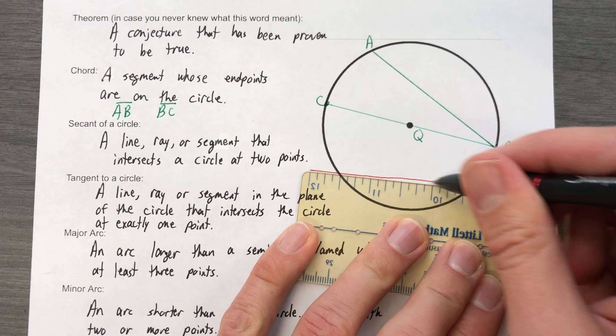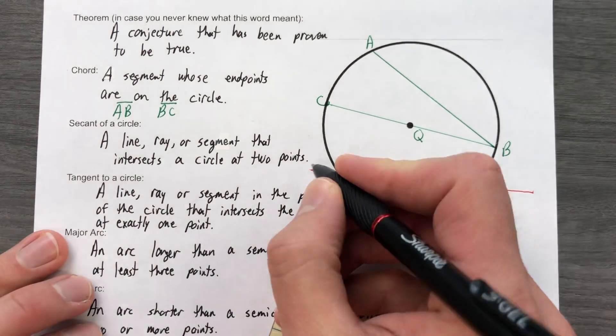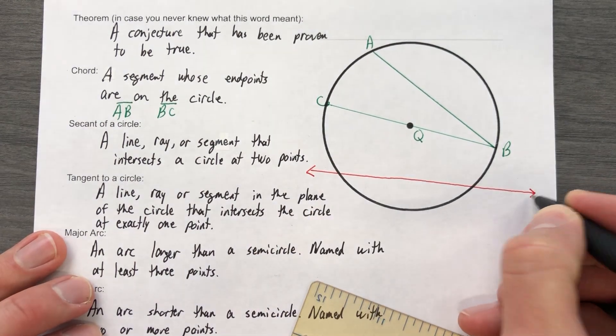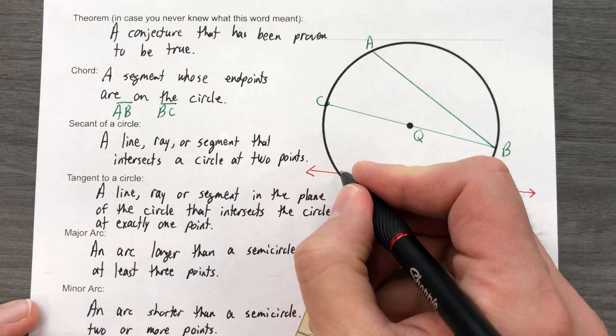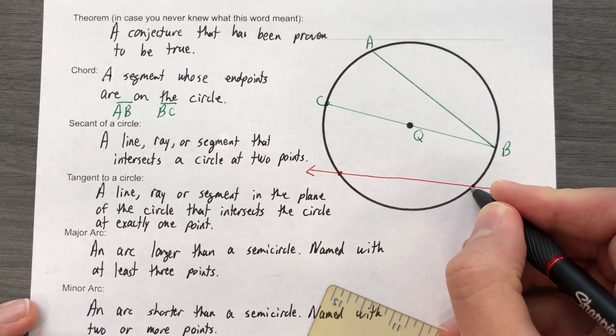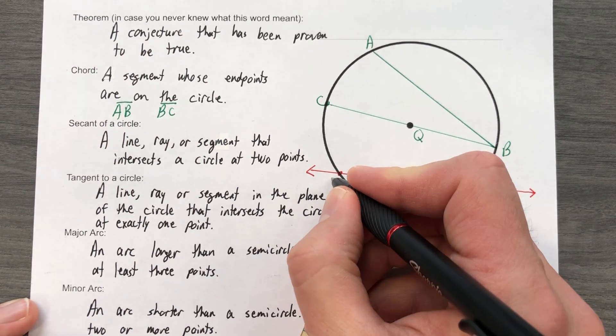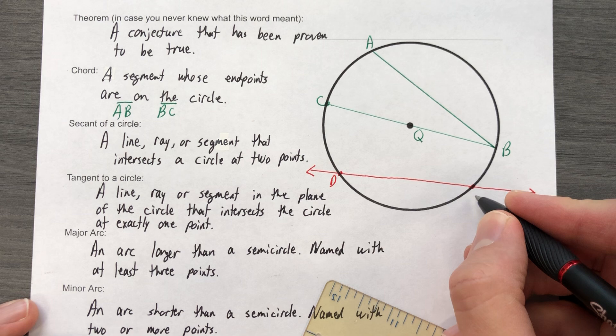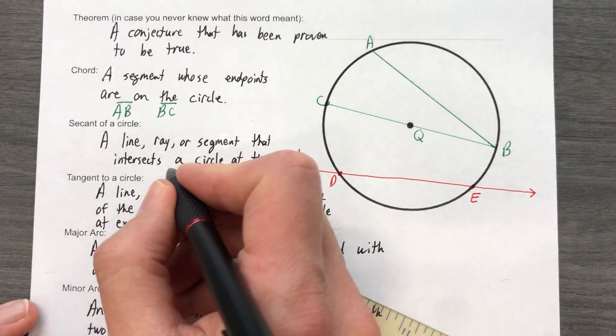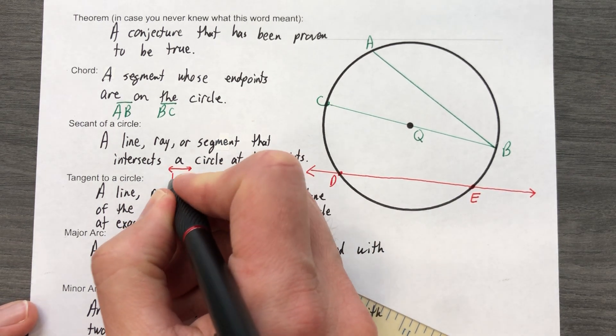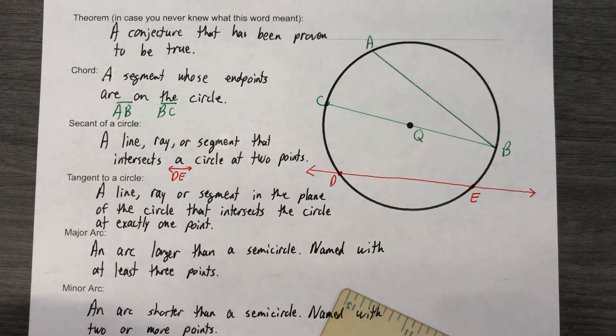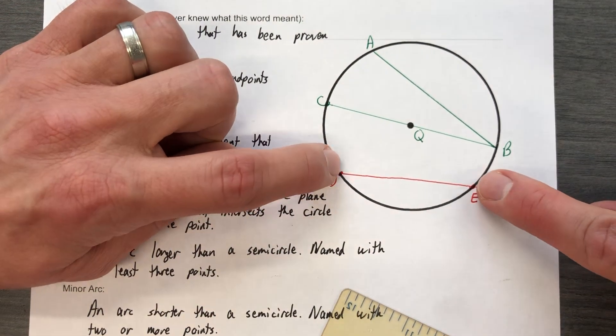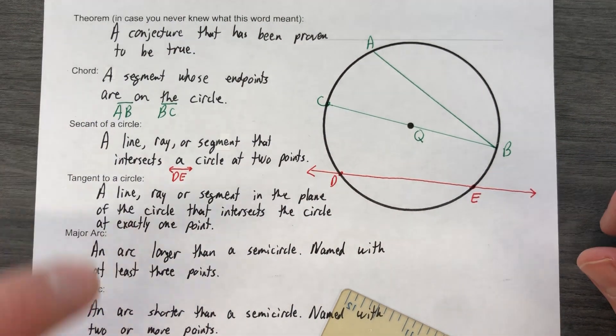So, for example, right there, crooked as it is even though I used a ruler, that is a secant. There it is. We're gonna start using other letters, so like D and E. A secant of a circle could be like line DE. Now I could say that DE segment itself is a chord.